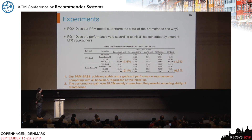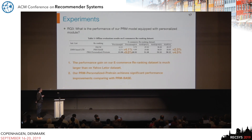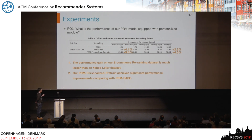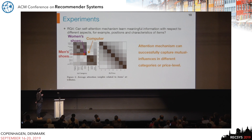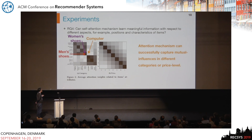The second research question is whether performance gains of the re-ranking method come from the powerful encoding ability of the transformer. The third question asks about the contribution of the personalized module — adding it yields significant performance gains compared to the base re-ranking model without personalization. The fourth question is whether the self-attention mechanism of the transformer learns something useful. The answer is yes: attention weights show that attention between men's shoes and women's shoes is larger than between men's shoes and a computer, and items with similar price levels have higher attention weights.